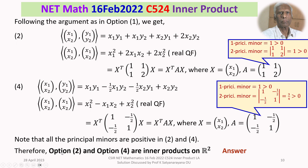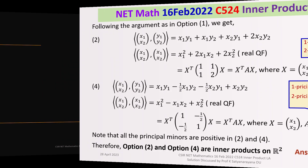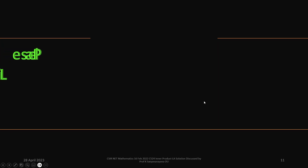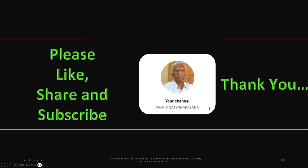So our answer is that option 2 and option 4 are inner products on R square, and options 1 and 3 are not inner products on R square. That is the detailed discussion of the solution of this problem from the section Linear Algebra, based on inner products. I am sure you have understood the solution, and I wish you all the best. Thank you.